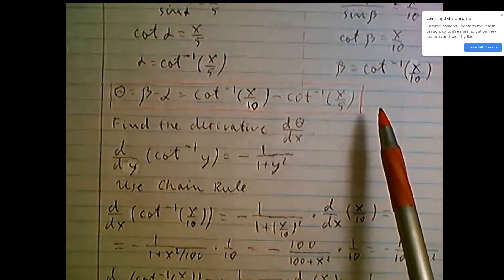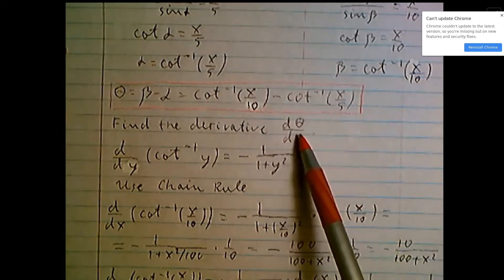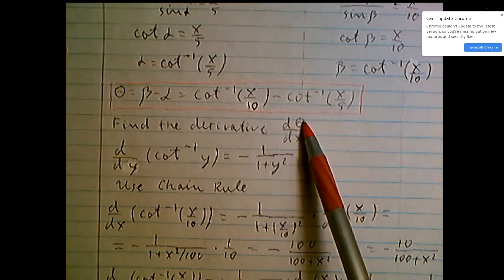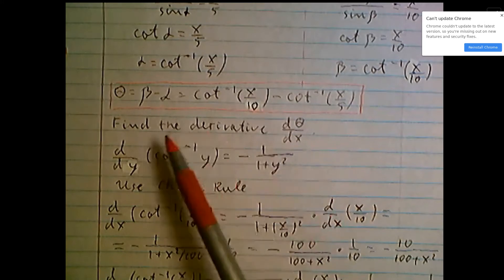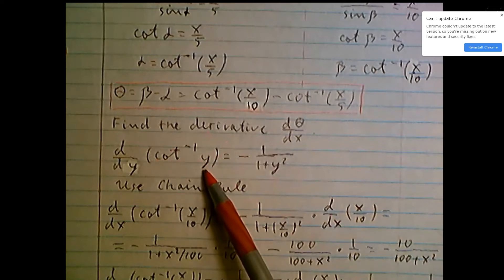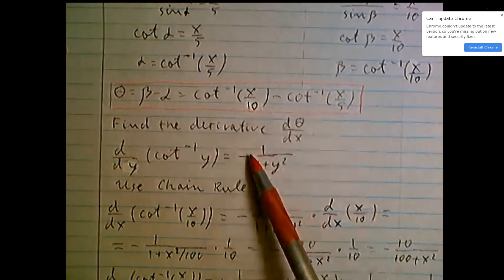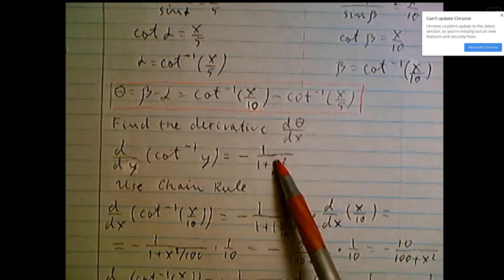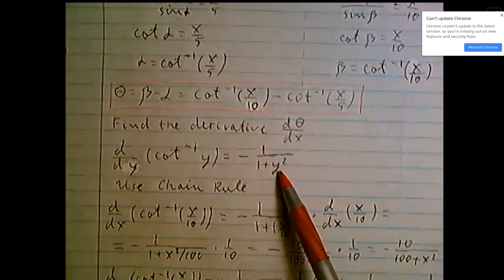Now we need to investigate this expression. Find the derivative d(theta)/dx. I remind you the fact: what is the derivative of inverse cotangent of y? d/dy of inverse cotangent of y, it will be minus 1 over 1 plus y squared.